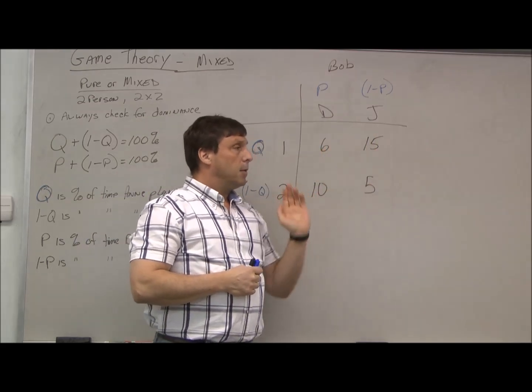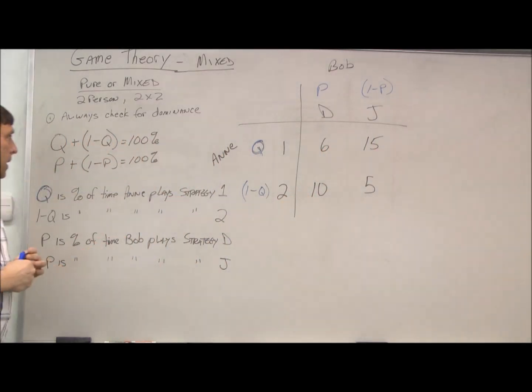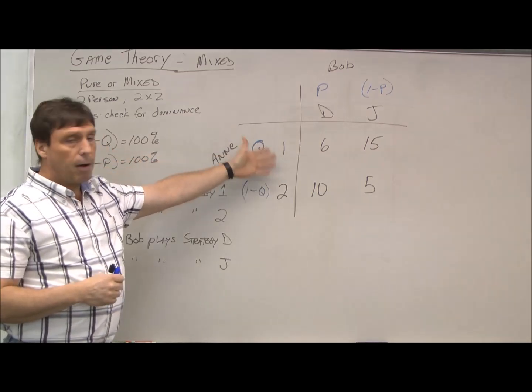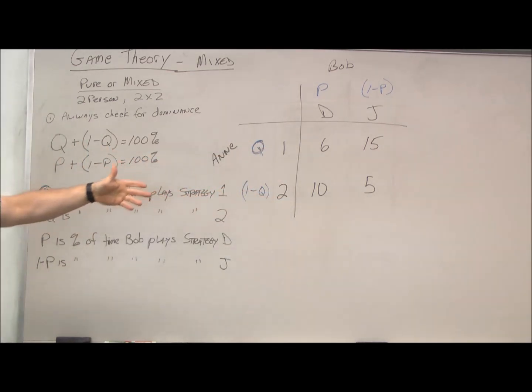Just like any one of these game theory problems, the first thing we do is check for dominance. We can see that there's no dominance for Bob, so we proceed. Keep in mind that with statistics, any choices represent 100% of our strategy, so there is no third choice. It's either q or not q equals 100%, and the same for Bob.